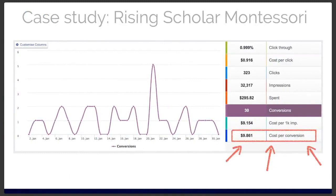Let's look at the case study — Rising Scholar Montessori. This is a campaign over basically a 30-day period. The squiggly line graph shows the number of conversions: in that month they got 30 conversions. What conversion means here is somebody clicked on a Facebook ad we designed for them, went to a landing page, and then filled out a tour request form — they gave their contact information and requested to book a tour for that school.